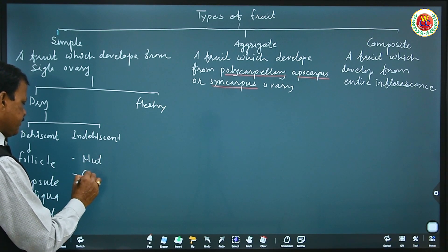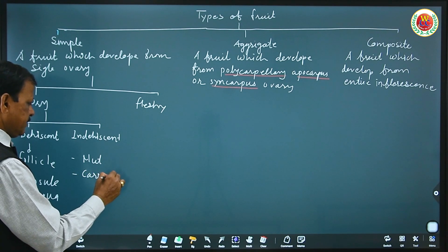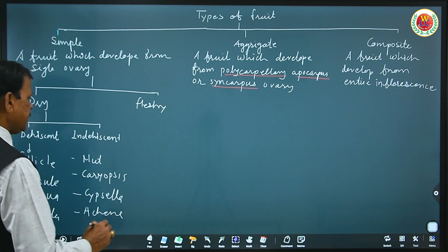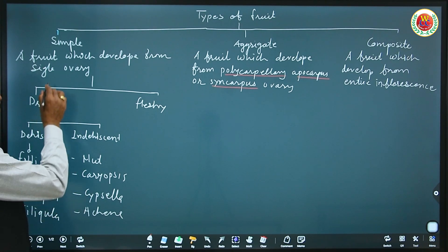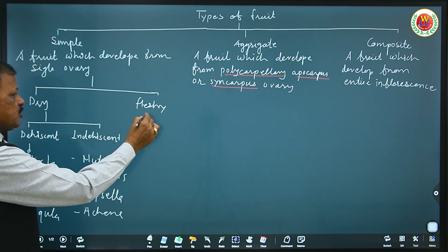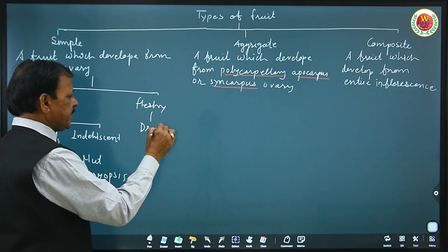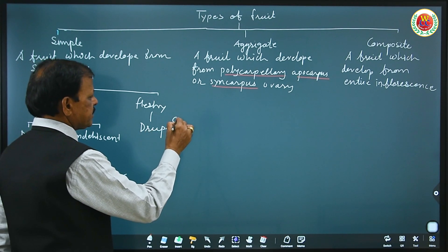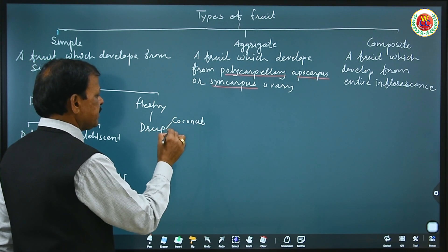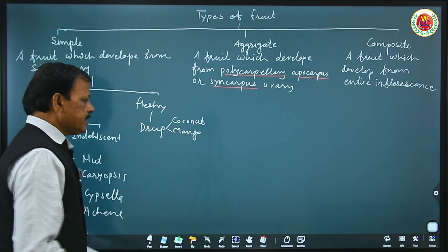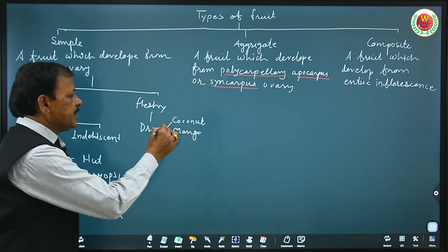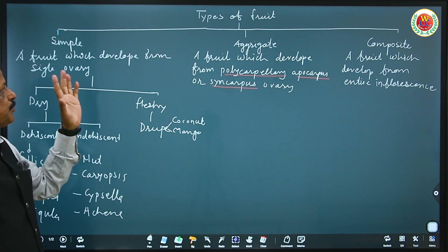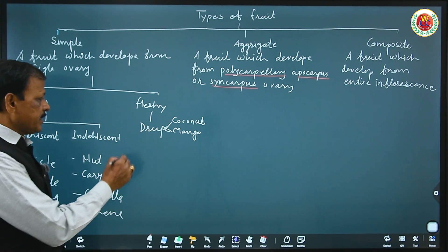Indehiscent fruits do not break open at maturity — they include nut, caryopsis, and cypsela. We are concerned with drupe: simple, dry, fleshy — that is drupe, because it is given in the book. Examples are coconut and mango, which are simple fleshy drupe fruits.